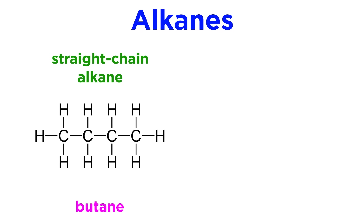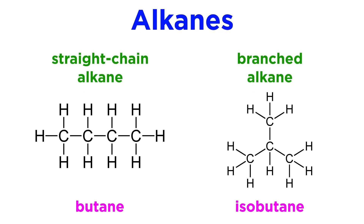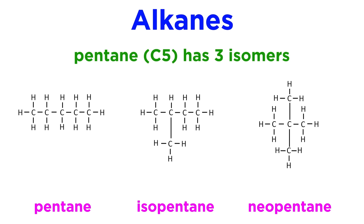These are examples of straight-chain alkanes, but we can also have branched alkanes. For example, instead of straight-chain butane, we could have isobutane. These are structural isomers, as they have the same formula, C4H10, but they differ in their connectivity. Pentane has three isomers. The more carbons there are in the molecule, the more isomers that are possible.